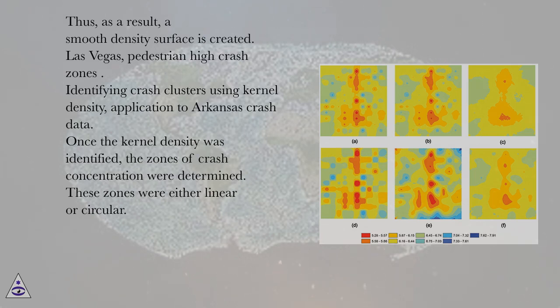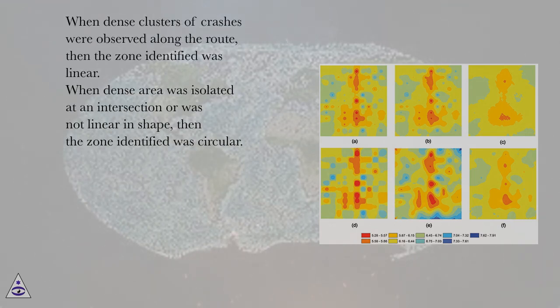Las Vegas Pedestrian High Crash Zones. Identifying crash clusters using kernel density application to Arkansas crash data. Once the kernel density was identified, the zones of crash concentration were determined. These zones were either linear or circular. When dense clusters of crashes were observed along the route, then the zone identified was linear. When dense area was isolated at an intersection or was not linear in shape, then the zone identified was circular.